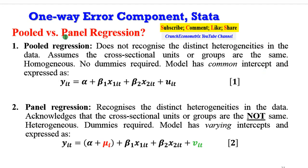Some people often wonder the differences between a pooled regression and a panel regression. Equation 1 is an example of a pooled regression and equation 2 is an example of a panel regression. A pooled regression does not recognize the distinct differences in the data.